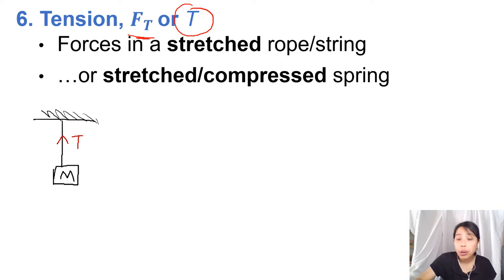This last challenge question is optional — if you want to try it, pause the video, then come back and check your work. The challenge: find the tension in each string. T1 holds up everything, including a pulley of mass 1 kg. T2 holds up the block on the left, and T3 holds up the block on the right. This whole system is not moving — it's in equilibrium. Acceleration is zero everywhere.